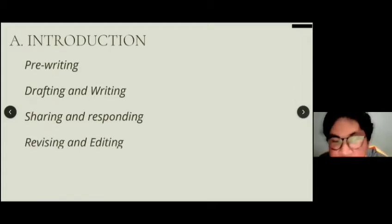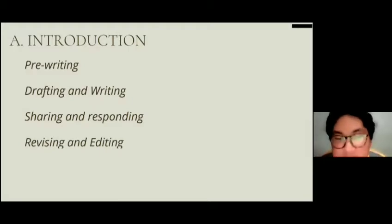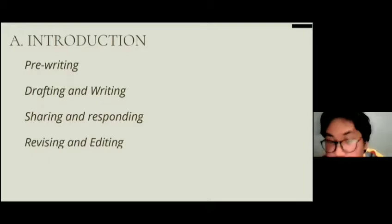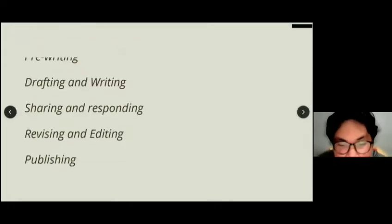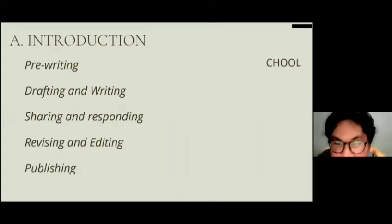Next, we have revising and editing. In this step, there are two things the writer has to do. According to Reid, revision takes place throughout the whole writing process, but the writer needs to focus on five elements: content, organization, headings, opening and closing, and language. Editing is the final process in writing — after revision, the writer has to edit grammar, punctuation, spelling, and everything related to what they wrote.